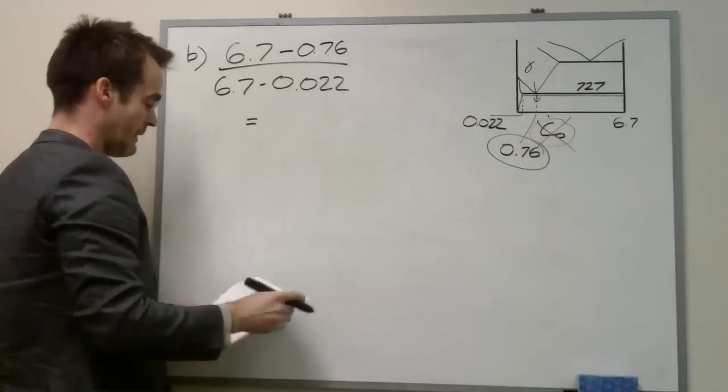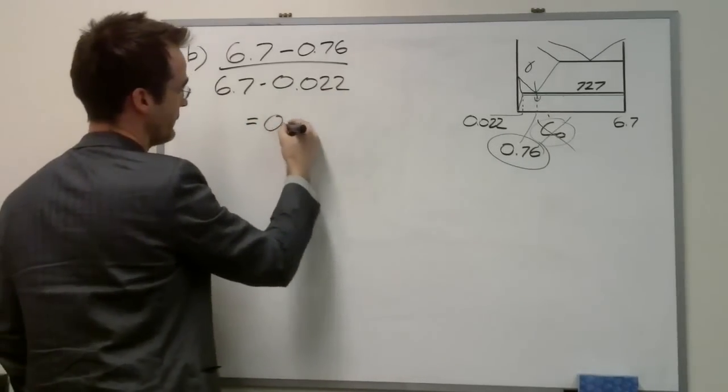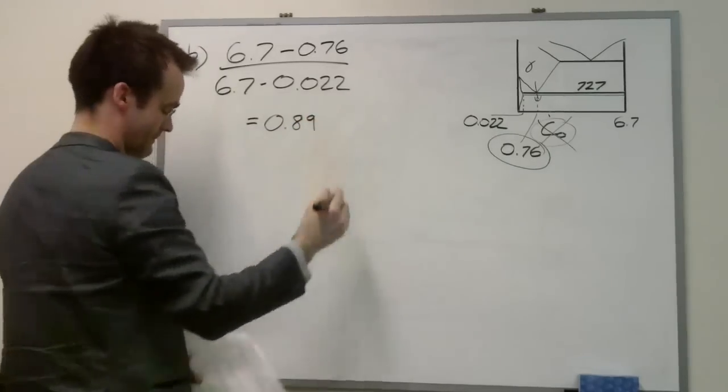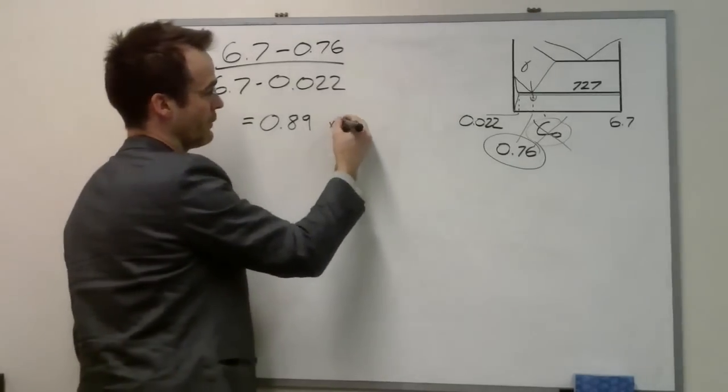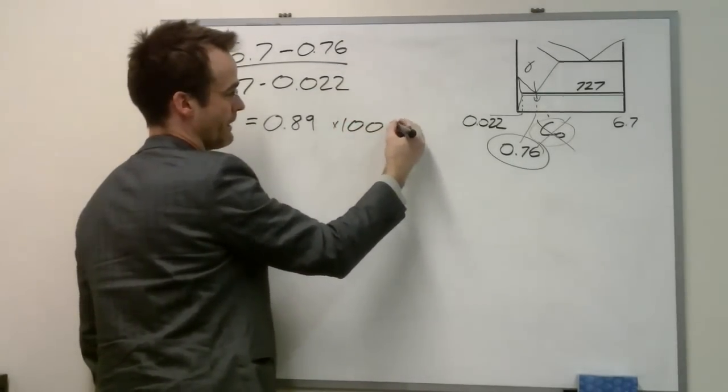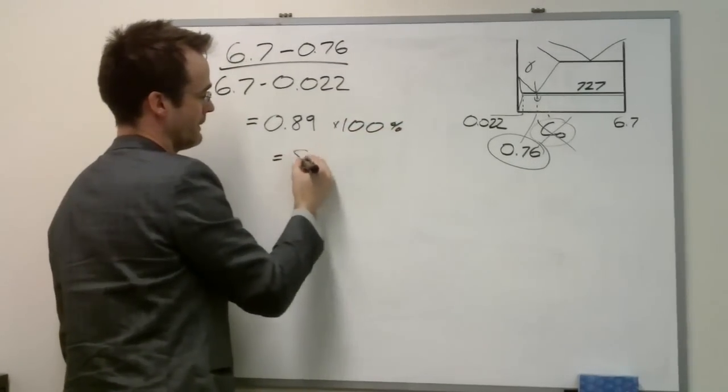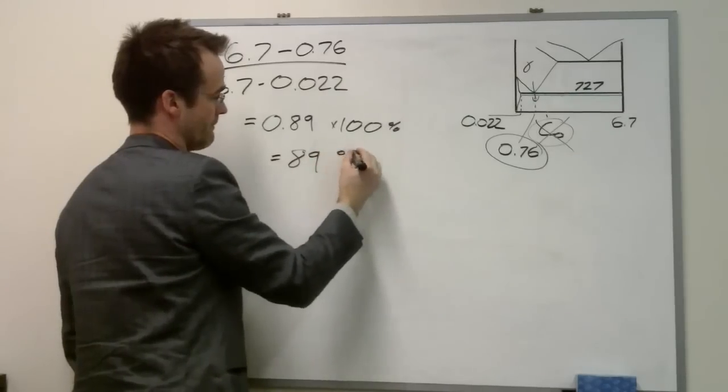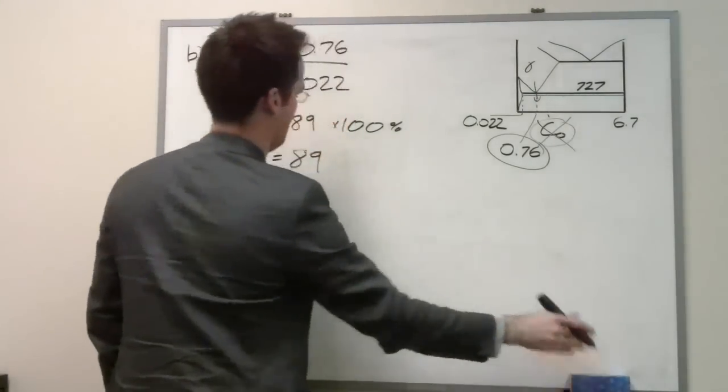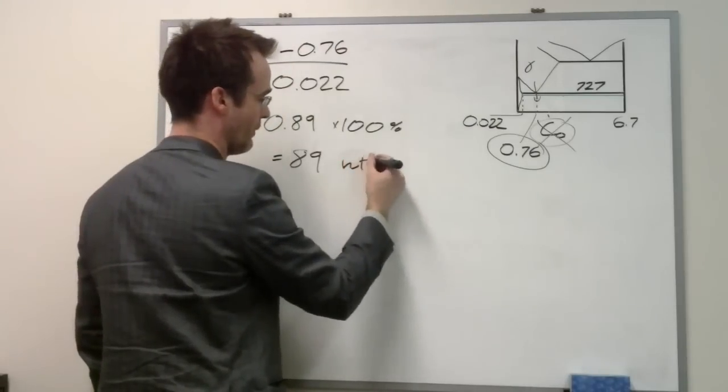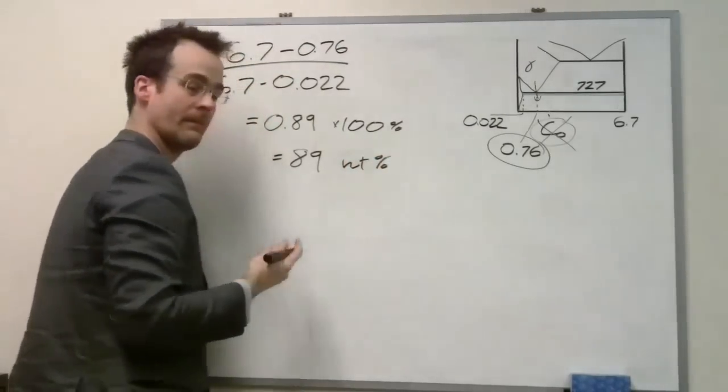And that works out to 0.89. The question asks in weight percent, so we multiply by 100%. We find that 89—let's just be thorough—weight percent is ferrite.